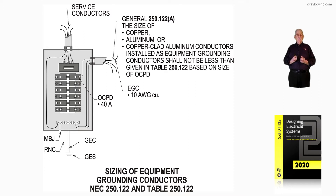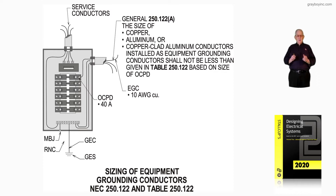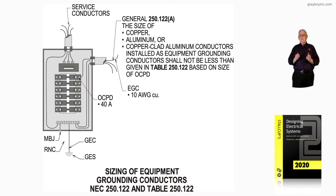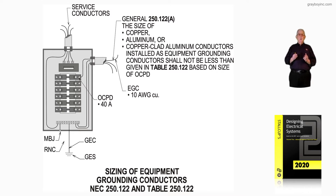The call-out talks about the general rules of sizing equipment grounding conductors, 250.122A. The size of the conductor — it could be copper, aluminum, or copper-clad aluminum conductors installed as equipment grounding conductors — shall not be less than given in Table 250.122, based upon the overcurrent protection device.